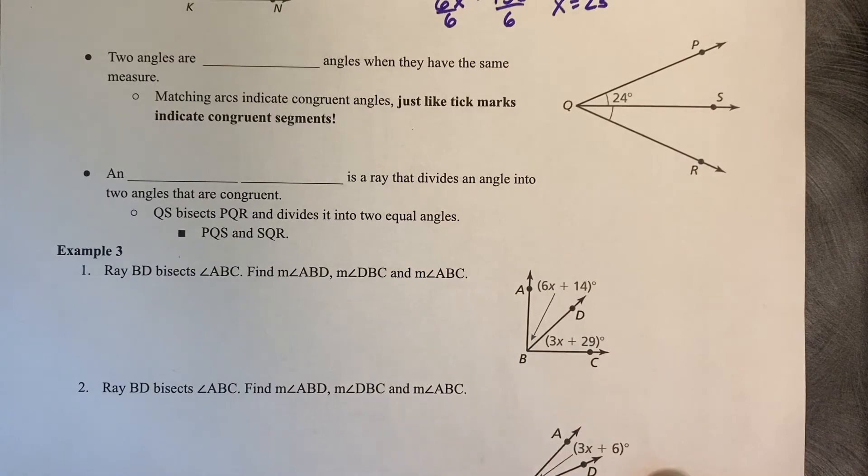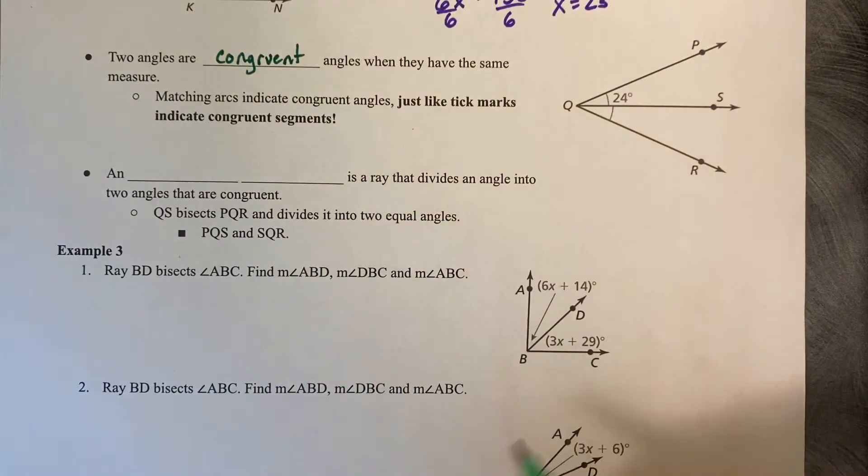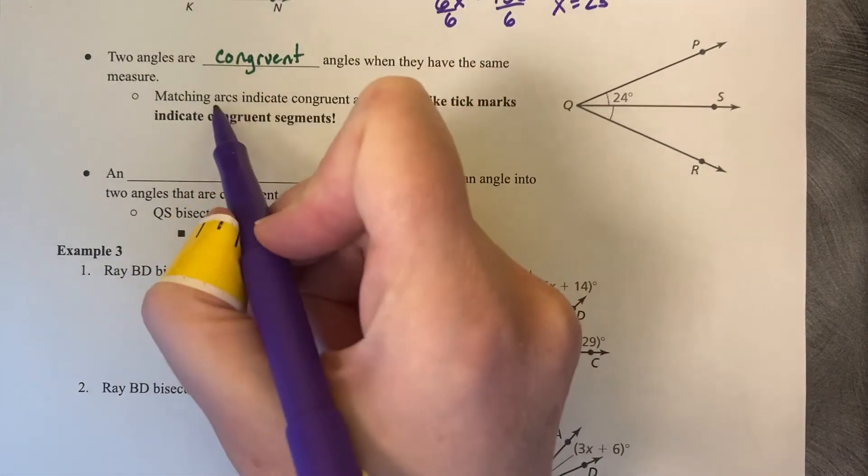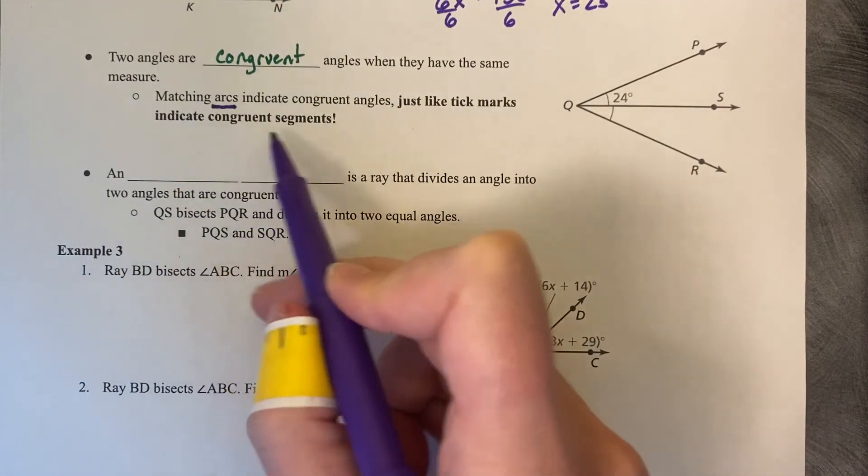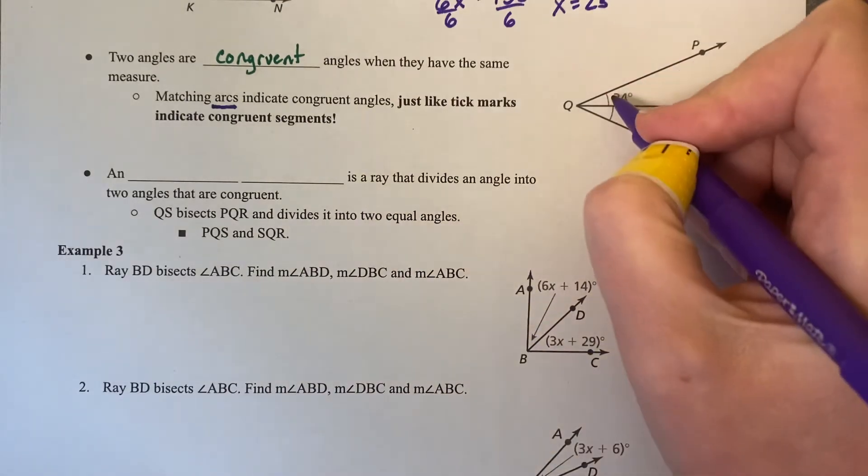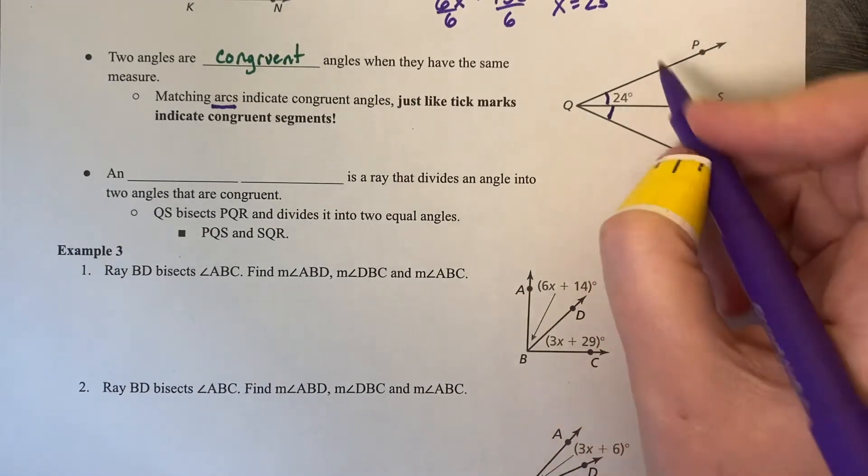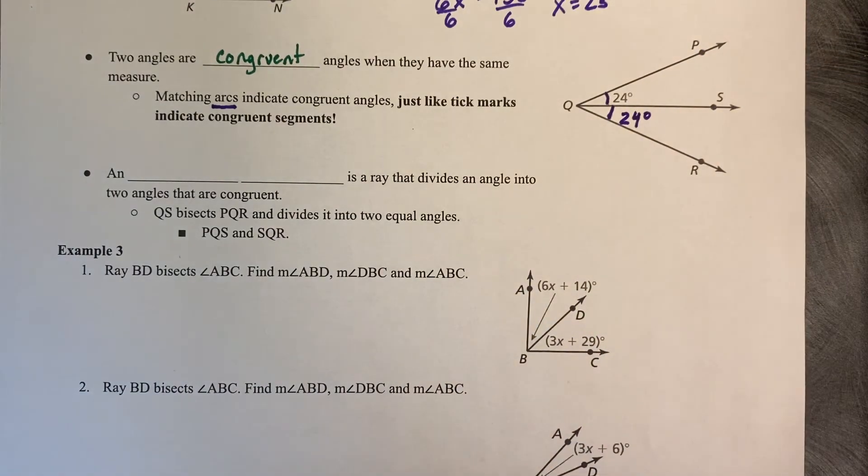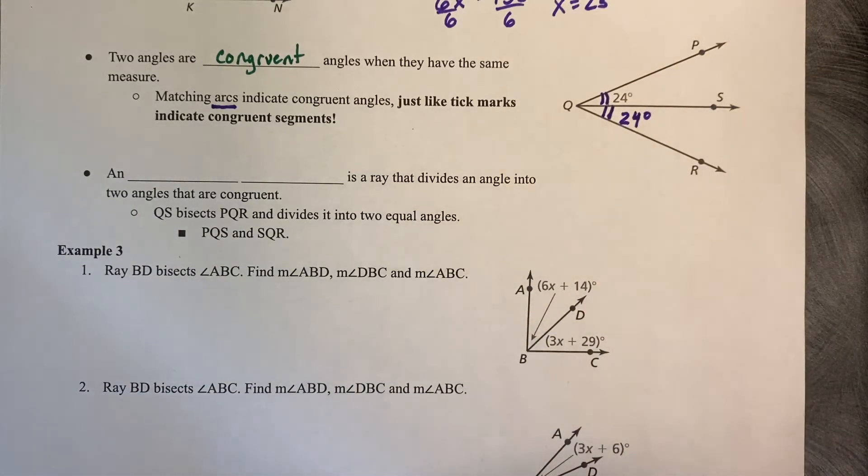Two angles are congruent when they have the same measure. Matching arcs indicate congruent angles, just like tick marks indicate congruent segments. This is an arc mark on this diagram over here, those little markings there. So if that is 24 degrees, then this is also 24 degrees. You can have more than one arc mark to talk about multiple angles at a time. And that still means that those two angles are congruent.